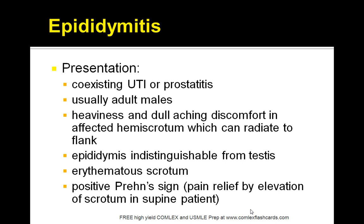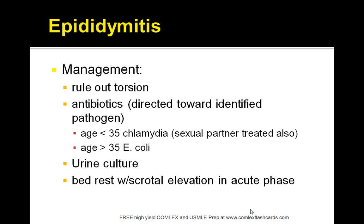If the Prehn's sign is negative and the process is acute, you are thinking of testicular torsion. Remember the Prehn's sign when you encounter it on a board exam question or in patient management. The first step in management is to rule out torsion. Torsion is a surgical emergency, and with torsion the Prehn's sign will be negative — it is typically a more acute process.